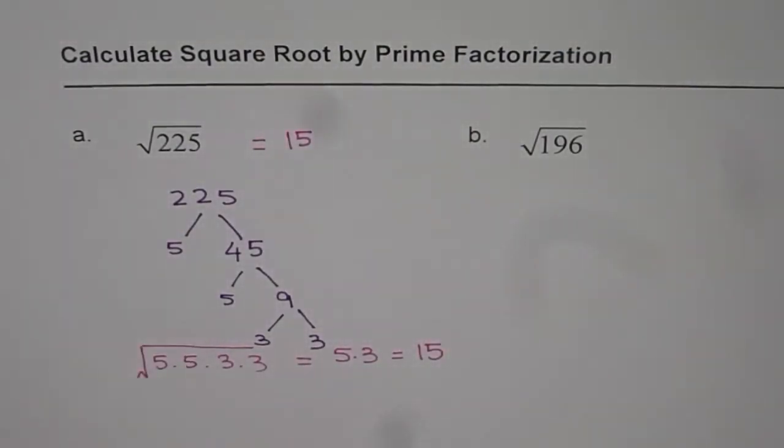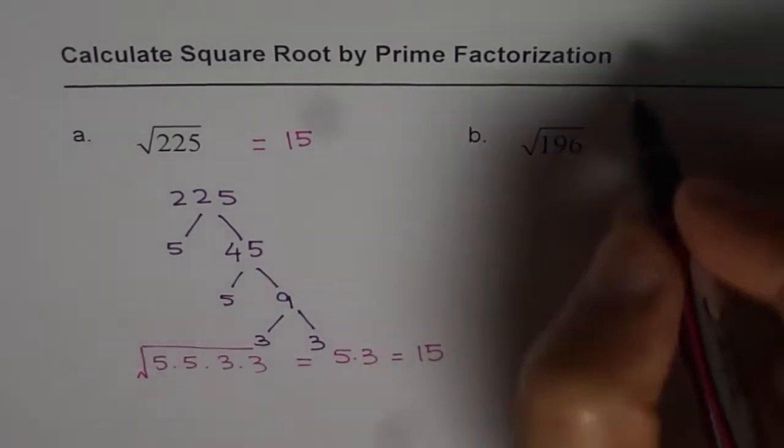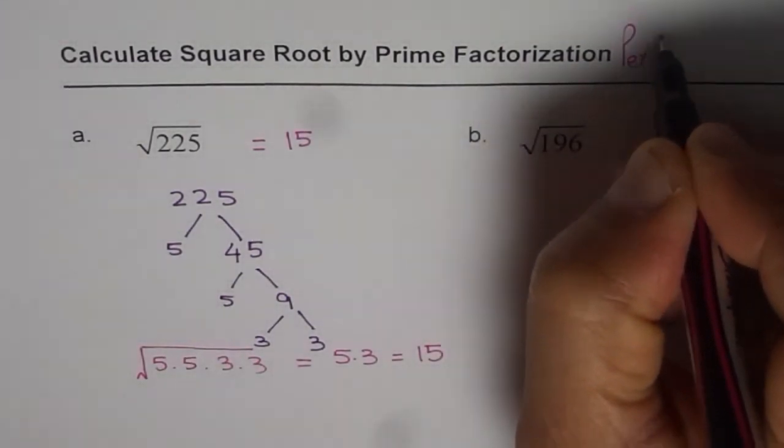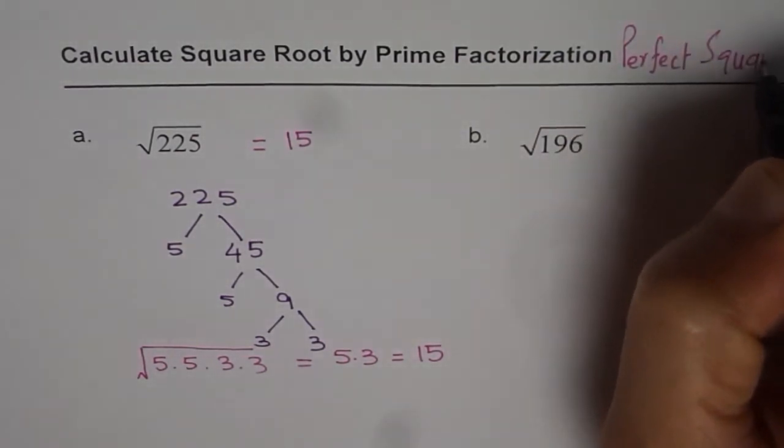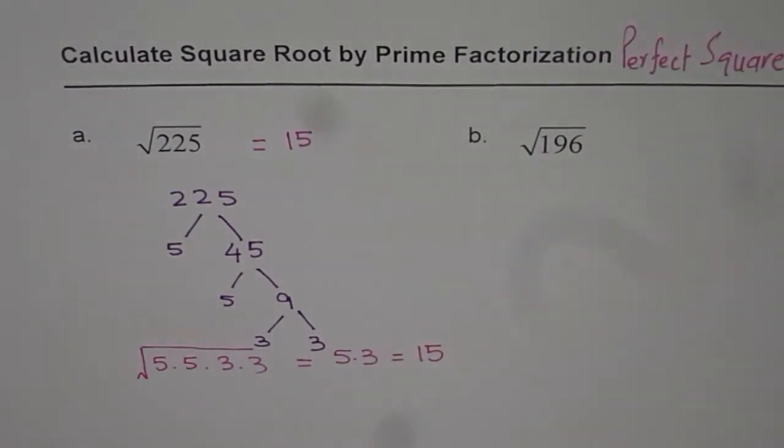We can easily find square root of a perfect square. This is a perfect square. Let me write the word perfect square by prime factorization.